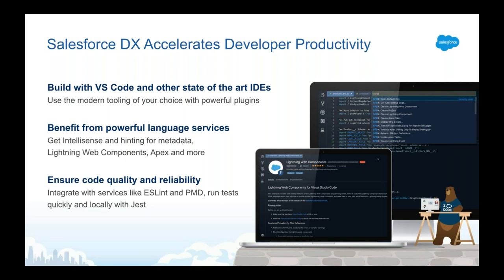Visual Studio Code is the official IDE for Salesforce developers. It comes with a Salesforce plugin that provides powerful language services, including intelligence and hinting for metadata, as well as the ability to create Lightning Web Components and Apex classes from the command palette — meaning you don't have to type SFDX commands every time. If you're using an IDE without a Salesforce plugin, you can use the Salesforce CLI out of the box, and save commands to a script. Code quality tools like Lint, PMD, and Jest tests for Lightning Web Components are also available.